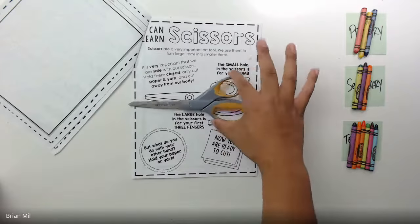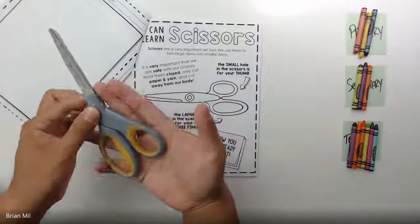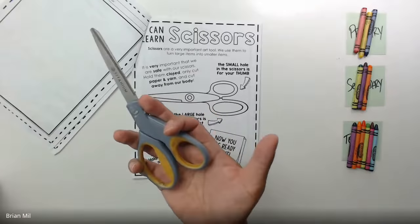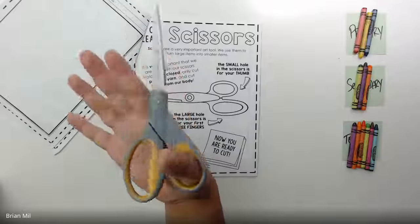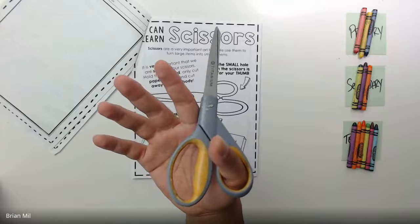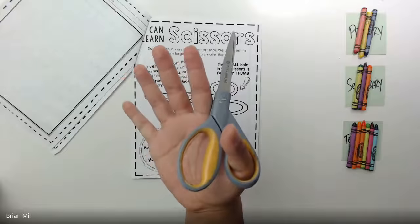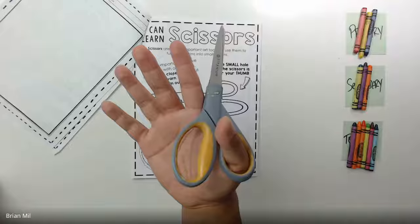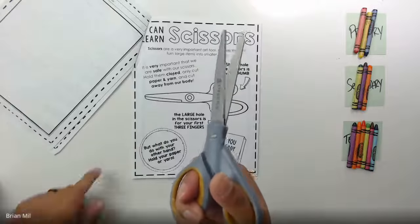I'm going to pick up my scissors. Who can tell me where does my thumb go? Can anyone raise their hand? Where does Luke think my thumb goes? In the small circle, good job! Where do my three fingers go? Anyone know, Jaden? In the oval, great job! My three fingers here.